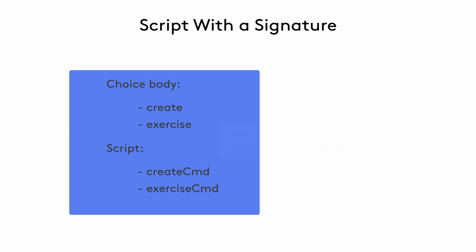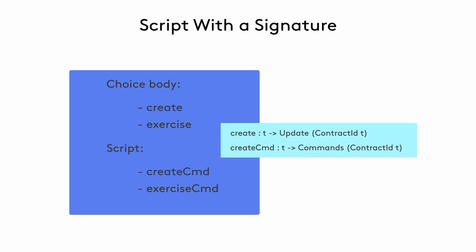To be more specific, just like the create function used in choices, the createCMD function results in the create action being executed on the ledger. However, create and createCMD have different signatures. The return type of the create function is update and the return type of createCMD is commands. In a test script, commands gets passed as the second argument of the submit function, which returns script. Both the update and script types are instances of the action type class. Update represents an action executed within the DAML application running on the ledger, whereas script simulates the submit of commands from the DAML client application to the ledger and is executed off ledger.